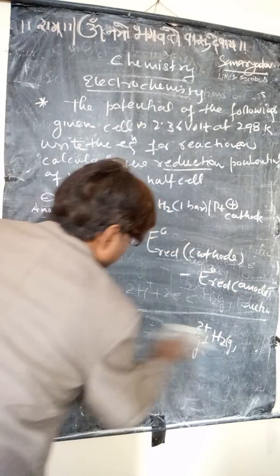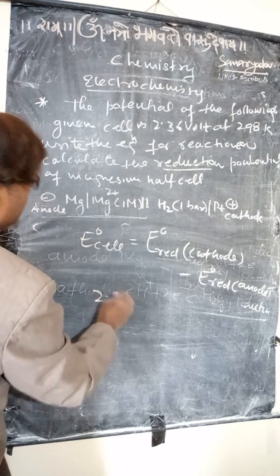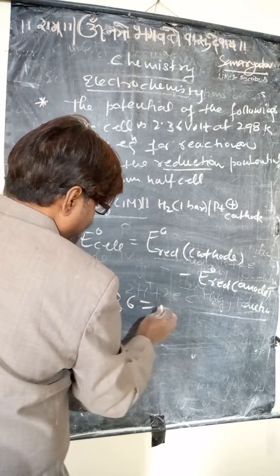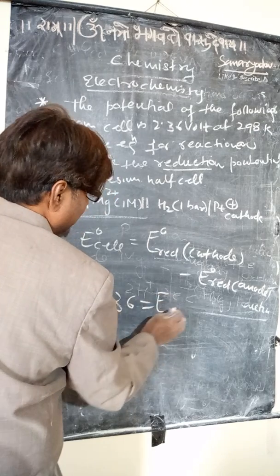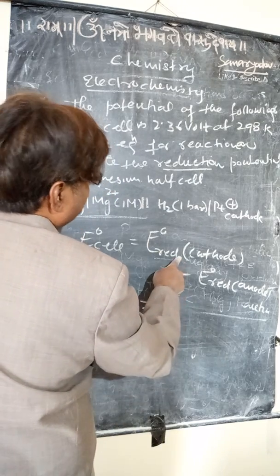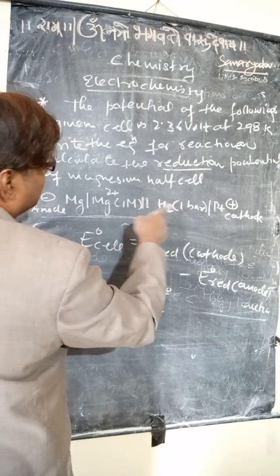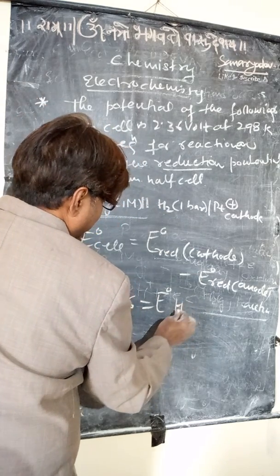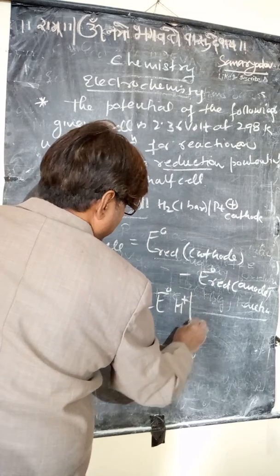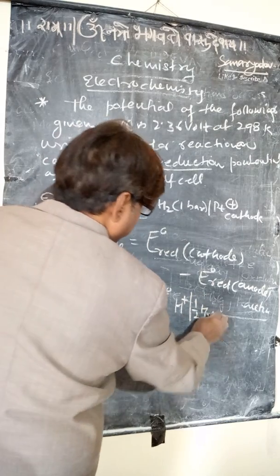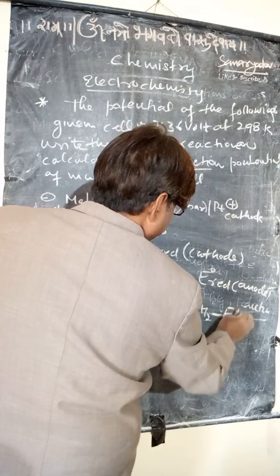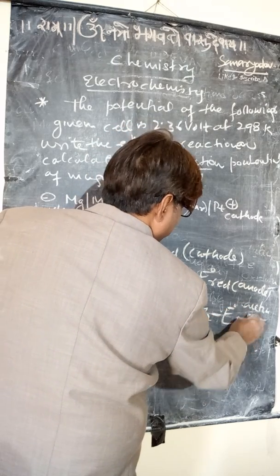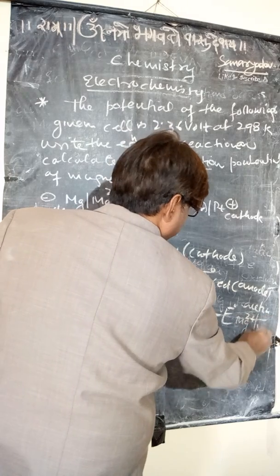Substituting the given values: 2.36 equals E° of the cathode, that is H⁺ | half H₂, minus E° of Mg²⁺ | Mg.